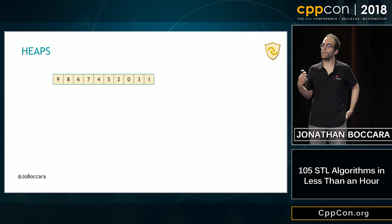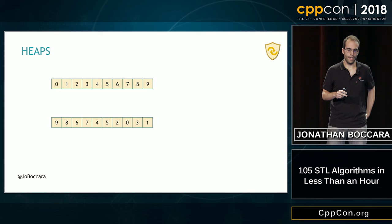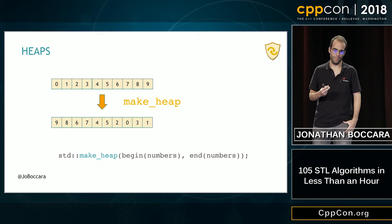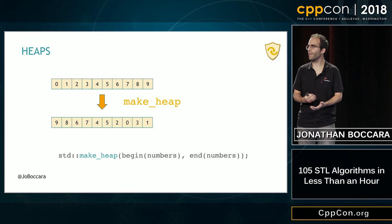The first thing we can do is take values that are not particularly a heap and rearrange them so that they respect the heap property — to make a heap. To do that we use std::make_heap with a beginning and an end, and that rearranges the elements inside the collection. That's our first algorithm of the day. One down, 104 to go. It's 105 STL algorithms in less than an hour.